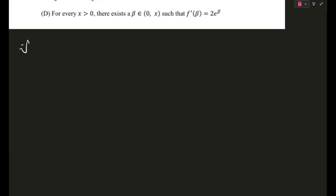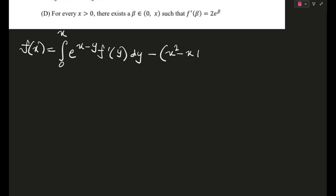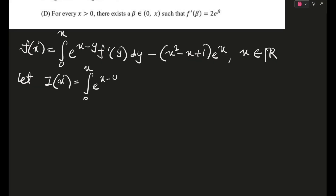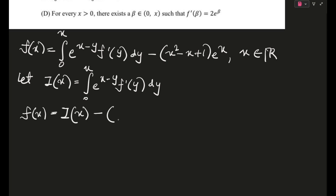So this was given: f(x) = integral from 0 to x of e^(x−y) · f'(y) dy, minus (x² − x + 1)·eˣ, where x belongs to the real numbers. Now just pay attention because I am going to do a lot of intense manipulation. So first I am letting a function i(x) = integral from 0 to x of e^(x−y) · f'(y) dy. From this I can write f(x) = i(x) − (x² − x + 1)·eˣ.